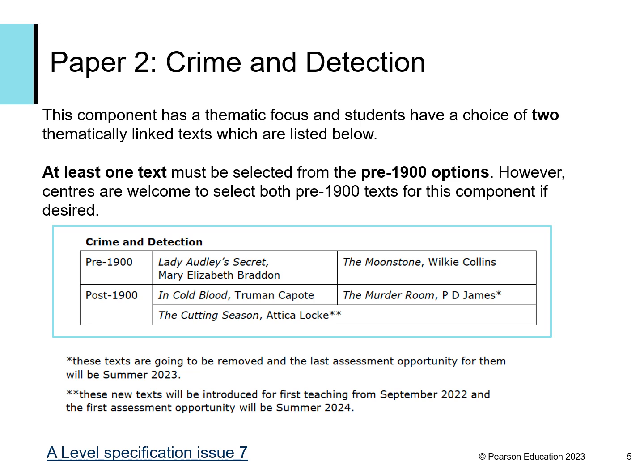This is an extract from the specification explaining the requirements for this paper. The component has a thematic focus and students have a choice of two thematically linked texts. The Cutting Season is a new text introduced to replace the Murder Room and is first assessed for A-Level in Summer 2024. At least one of the texts studied in the chosen theme must be selected from the pre-1900 option, so for Crime and Detection you must pair The Cutting Season with either Lady Audley's Secret or The Moonstone to fulfil this requirement of the specification.